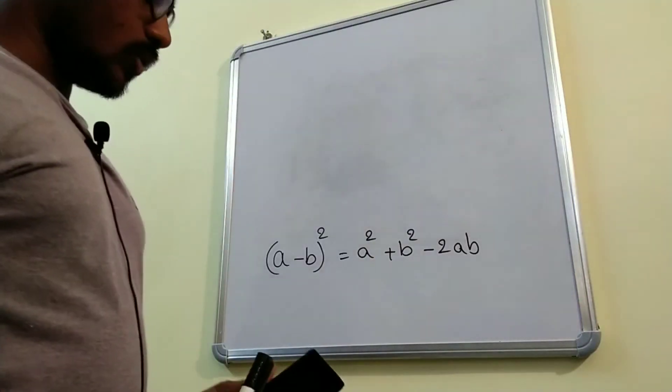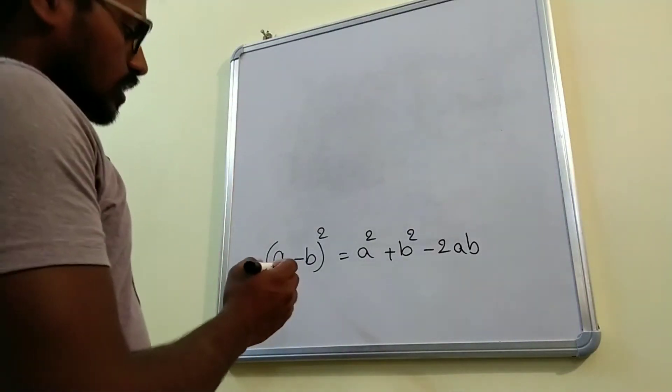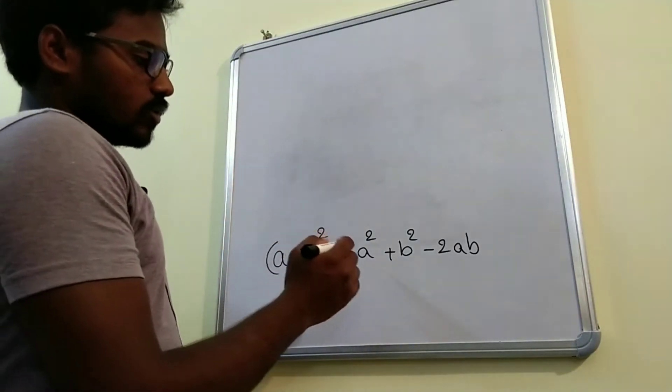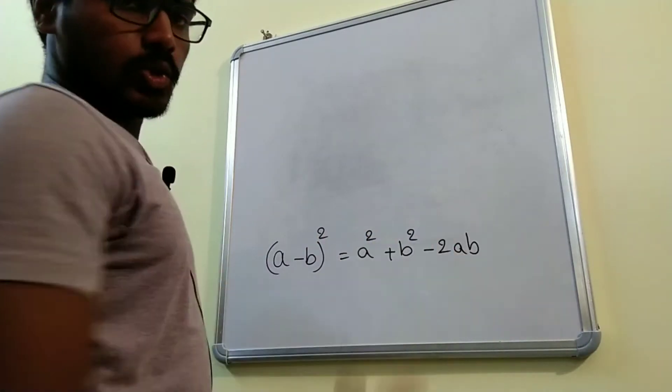Hi, welcome back to my channel, Skill Set Go. In this video, we will prove a minus b whole square equal to a square plus b square minus 2ab.